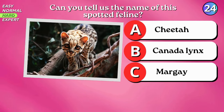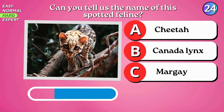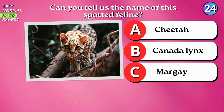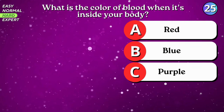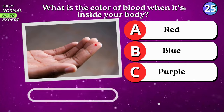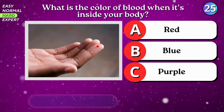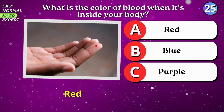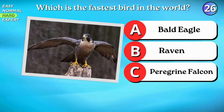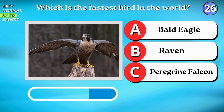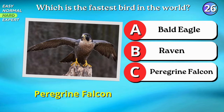Can you tell us the name of this spotted feline? What is the color of blood when it's inside your body? Red. Which is the fastest bird in the world? Peregrine falcon.